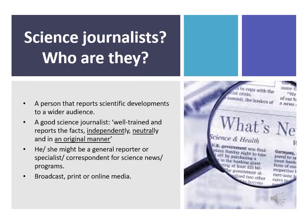We've looked at the role of science journalism. Now we're going to look at who these science journalists are. These science journalists are usually a person that reports scientific developments to a wider audience. A good science journalist will be well trained and report the facts independently, neutrally, and in an original manner. Whatever the scientists have told them, through interviews or through their research, they will provide the information to the public in context. They should not and must not change the context. That's basically what we ideally think science journalists should be doing, but we're going to look at the issues later.